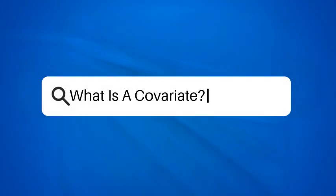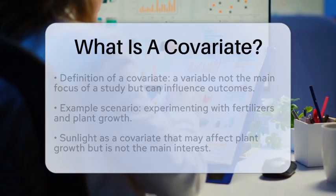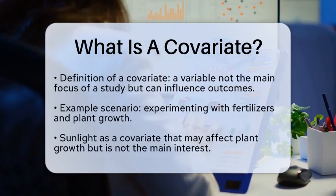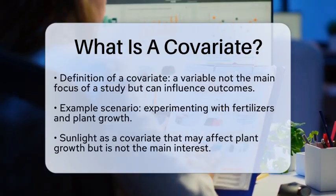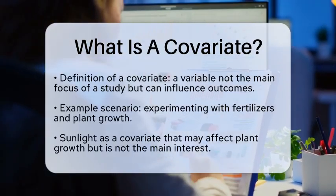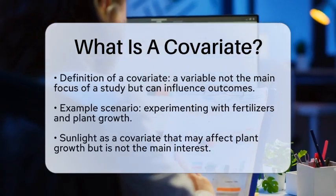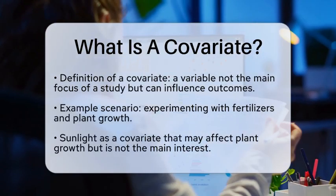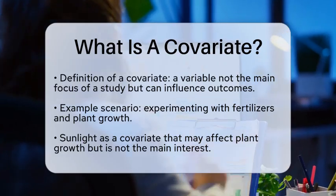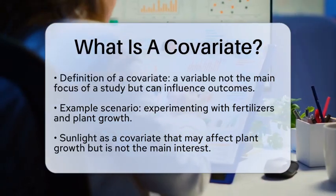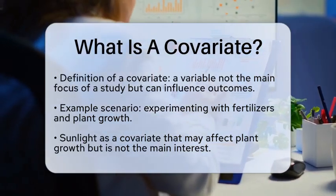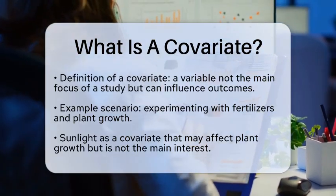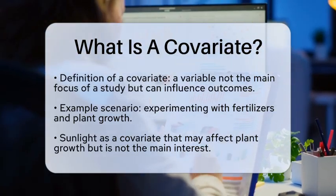What is a covariate? Imagine you are conducting an experiment to understand how different types of fertilizer affect plant growth. You might notice that the amount of sunlight each plant receives could also influence their growth. In this scenario, sunlight is a factor that could impact your results, but it is not the main focus of your study.